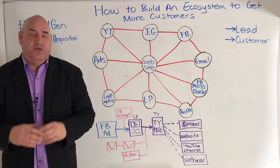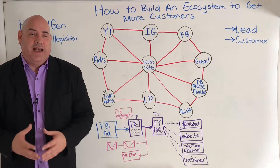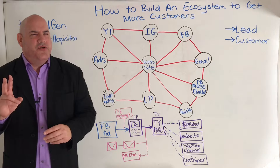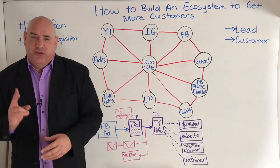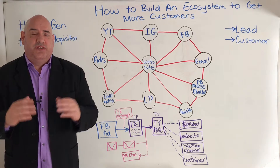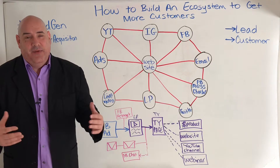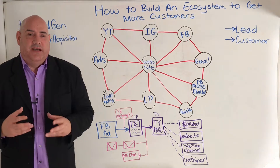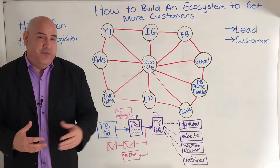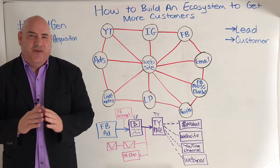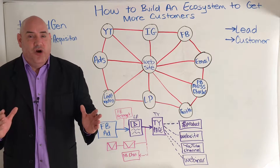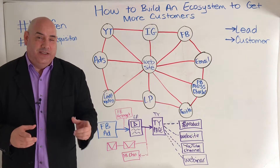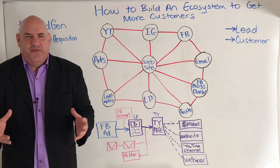If they land on your website, how do you get that website visitor — that potential customer — to convert into a lead? There are two things we're all trying to do with these platforms. First, you want these potential customers to become a lead. They become a lead by giving you their phone number, email address, or regular address — maybe they set up an appointment or want a demo of your product. You want them to first become a lead, and then over time, as you continue to market to them and build trust, eventually you want them to become a customer.